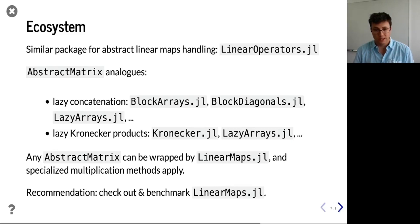So when you work with matrices alone, then there exist a couple of further alternatives. So for lazy concatenation, BlockArrays, BlockDiagonals, and LazyArrays, for example. For lazy Kronecker products, Kronecker.jl and LazyArrays again. So all these packages provide types that themselves are subtypes of AbstractMatrix and hence can be wrapped by LinearMaps and then combined if you wish with function-based methods. So even in the case when you work with matrices only, I would still recommend checking LinearMaps out and benchmarking it and see whether that serves your purposes.